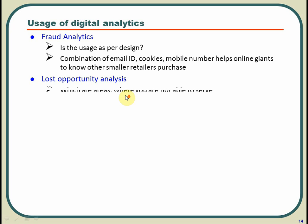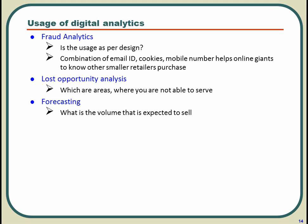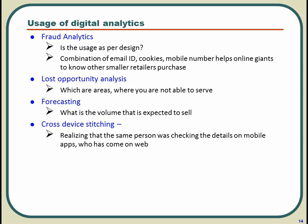There is also lost opportunity analysis — which areas are you not able to serve, where you do not have reach? If you are getting a lot of requests from those areas, you know how much volume you are losing. Can you forecast the expected volume? That helps you prepare your internal process and suppliers. Cross-device stitching means you understand it is the same customer who was looking at your product on the website and is now on mobile, or who checked product detail on mobile and went to the website to make payment — helping you serve the customer better by knowing their preference.